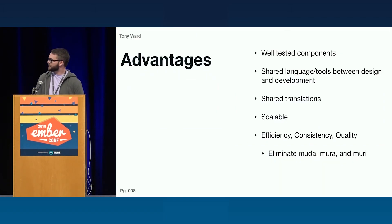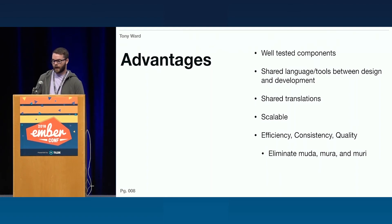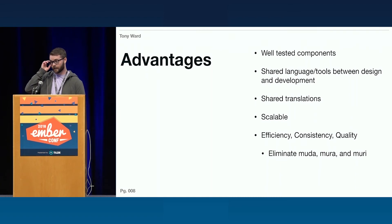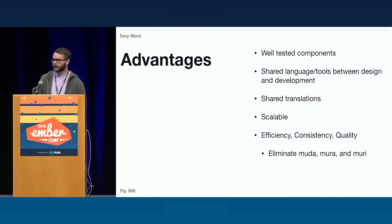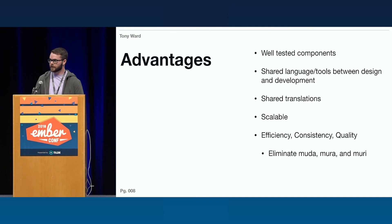Hopefully those brief examples allow you to see some advantages of using a shared component library. The really big one, at least for me — I'm really into testing — is having really well-tested components. As somebody uses Loom, they can be confident in the components that they're using, not only that they work well, but also that they'll look great across all browsers. Another advantage is shared language and tools between design and development, which helps bridge some communication gaps. Another big one is shared translations — we're a global company, and as more Toyota entities start using this add-on and contributing translations back, everybody using the add-on benefits from those translations as well.